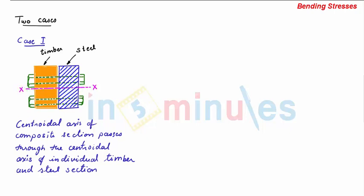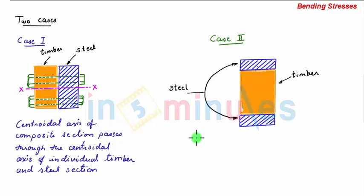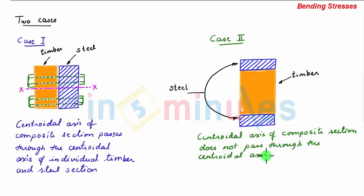Now let us take a second case in which the centroidal axis of the composite section does not pass through the centroidal axis of individual timber and steel sections. In the figure we have a timber section joined by means of two steel sections at the top and bottom.